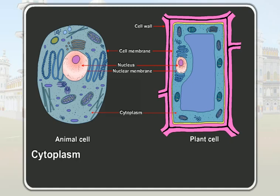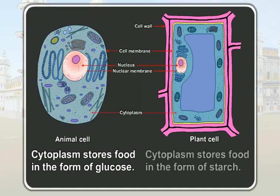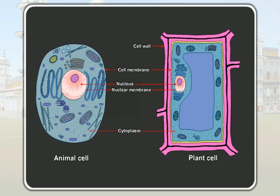The cytoplasm stores food in the form of glucose in an animal cell, but it stores food in the form of starch in a plant cell. Some important cell organelles like the mitochondria, the ribosomes, the vacuoles, plastids, Golgi bodies and centrioles are also found in the cytoplasm.